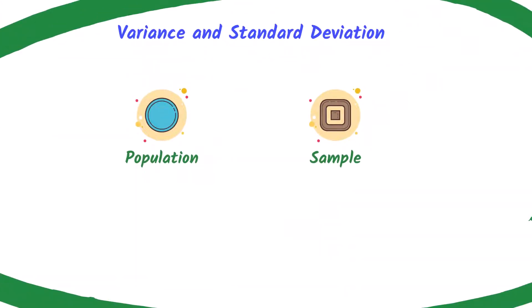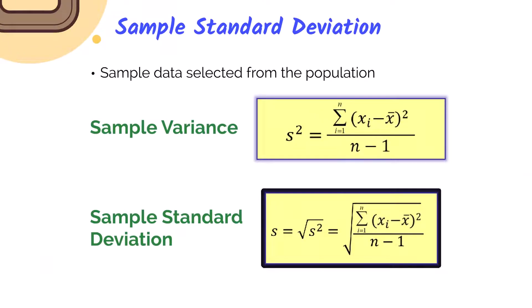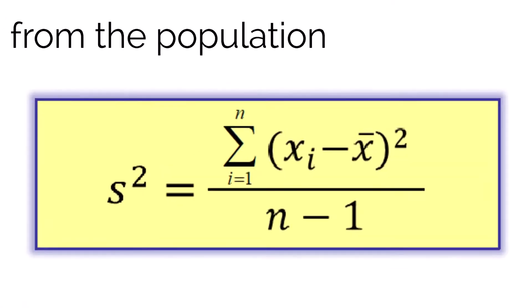Let's look at the difference for the sample standard deviation. For a sample standard deviation, this is based on a sample data selected from the population. Now if we look at our formula here for the sample variance, instead of sigma like you saw for the population variance, you see a lowercase s with a square. That's the symbol for sample variance.